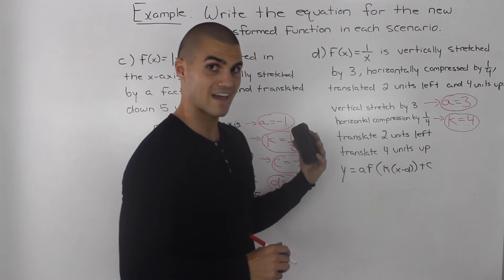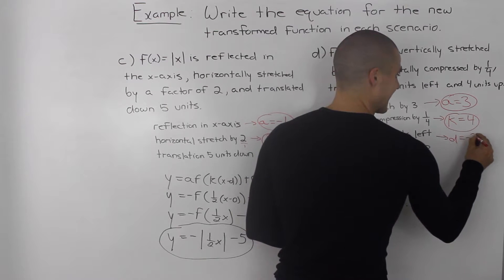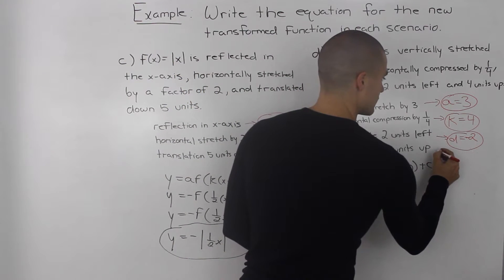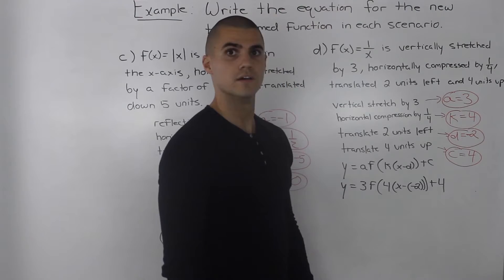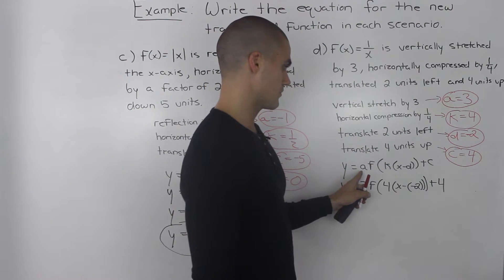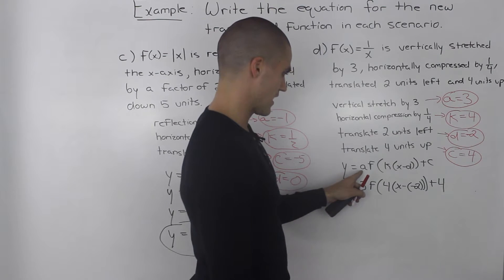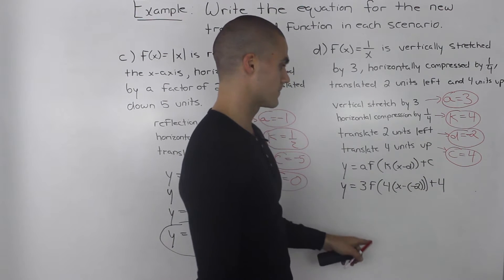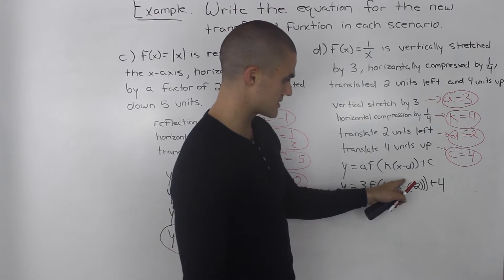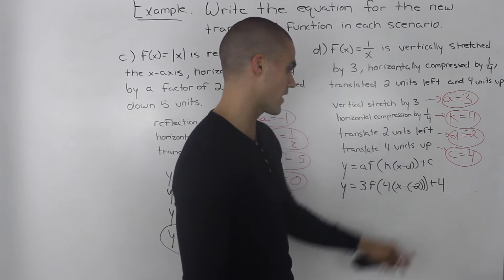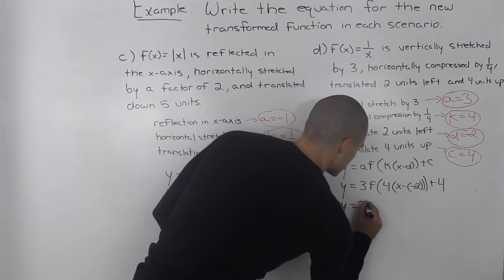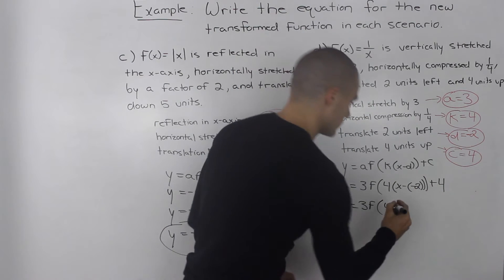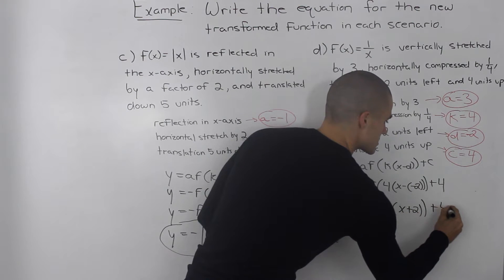Translating 2 units to the left means that our d value is negative 2. Translating 4 units up means that our c value is positive 4. Putting all of these into the general transformation: a is 3, k is 4, and for x minus d, since d is negative 2, we write x minus negative 2 in brackets. Simplifying that bracket gives us f of 4 times the quantity x plus 2, plus 4.